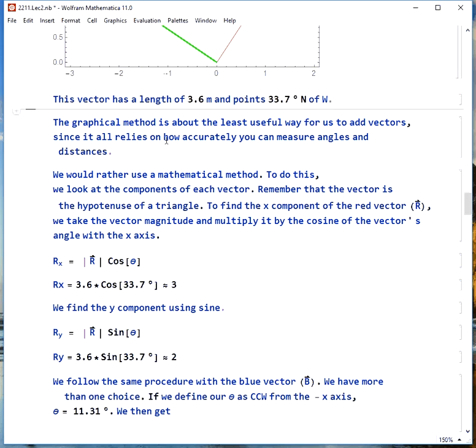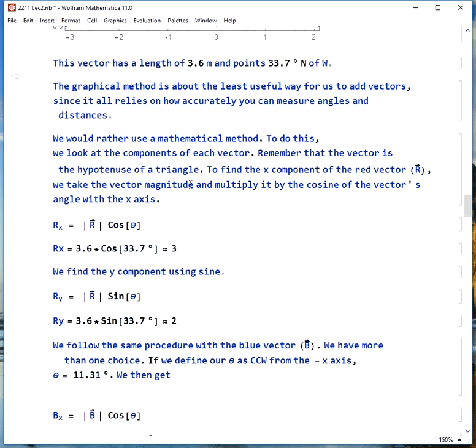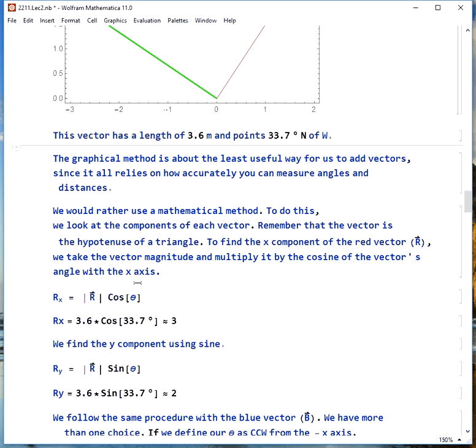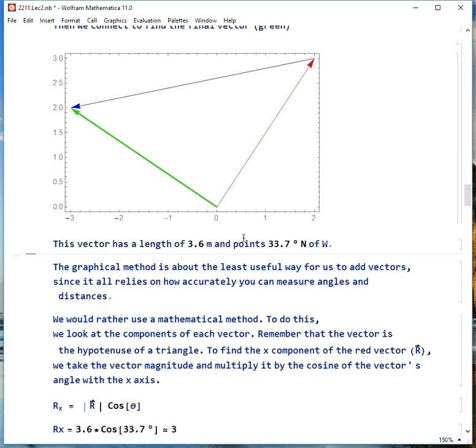A much more convenient way to add vectors is the mathematical method, and what we need to do here is just get the components of each vector. Again, keep in mind that the vector is the hypotenuse of a triangle, so if we were to find the x component of the red vector, we'll call it R.